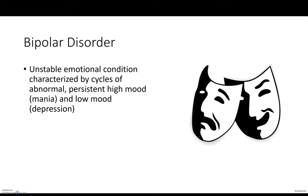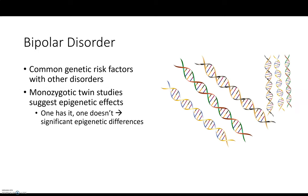Bipolar disorder is contrasted with MDD, which is sometimes called unipolar depression. Bipolar disorder is characterized by cycles of high mood — referred to as mania — and low mood, referred to as depression. It also has an apparent genetic component, and there is evidence of significant epigenetic effects: identical twins can differ, where one has bipolar disorder and the other doesn't, even though their genes are the same. This suggests not just genes, but modifications to the DNA — epigenetic differences — are involved.